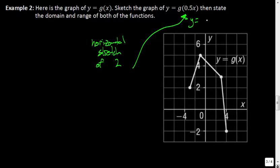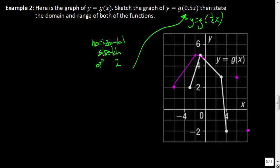It might be easier for you to think of this as y = g(½x). All of these ordered pairs: the x-coordinate is going to be multiplied by 2. Let me graph this in pink. These are going by increments of 2, so the point at negative 3 goes to negative 6. The one at negative 1 goes to negative 2. This one at 3 would be at 6. And lastly, this one at 4 would be way over here at 8. So we'd have a function that looks something like so.